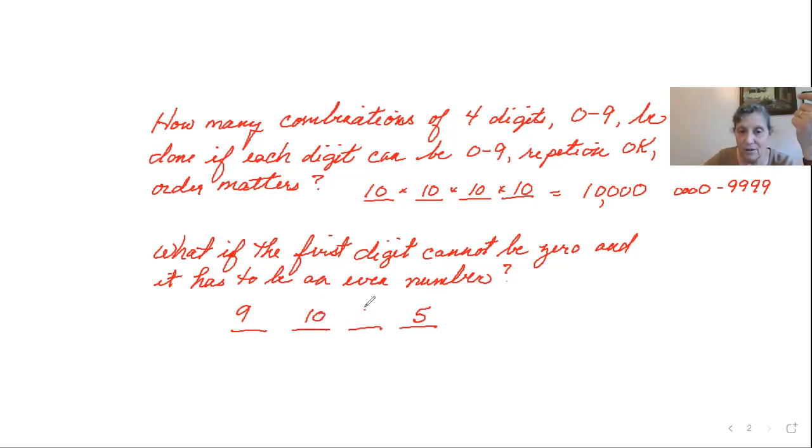So now there are only five possibilities to go here. We've still got 10 numbers that could go in the second and third position. So now we've got 9 times 10 is 90, times 10 is 900, times 5 is, we're down to 4,500 possibilities. That makes sense.